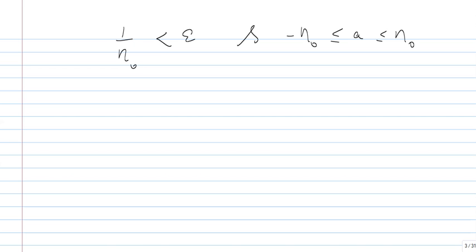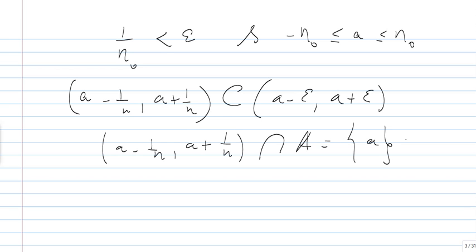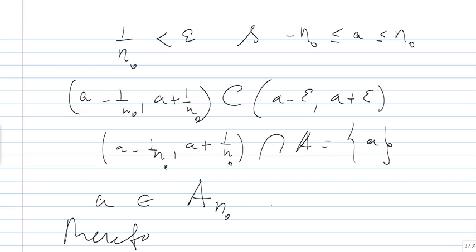Since (a − 1/N₀, a + 1/N₀) is included in (a − ε, a + ε), it follows that (a − 1/N₀, a + 1/N₀) intersected with A is exactly the singleton {a}. This clearly implies that a belongs to A_{N₀}, which completes the proof of our claim. Therefore, A is exactly the union of the A_Ns.